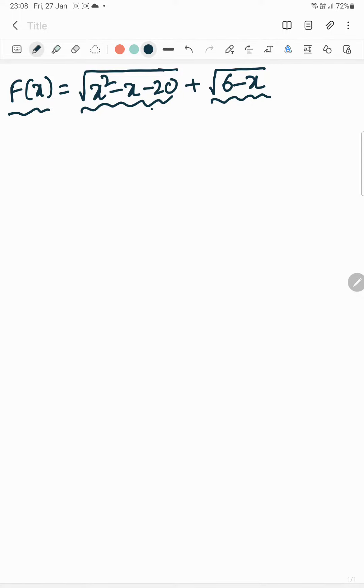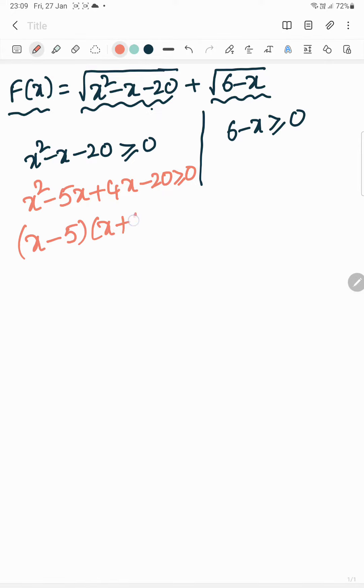First, x square minus x minus 20 greater than or equal to 0. For this, 6 minus x greater than or equal to 0. Now here factors are x square minus 5x plus 4x minus 20 greater than or equal to 0. x minus 5 into x plus 4 greater than or equal to 0.